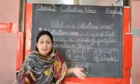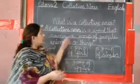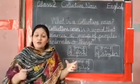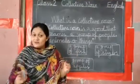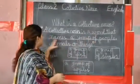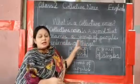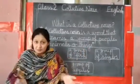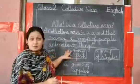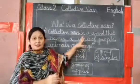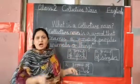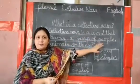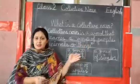What is a collective noun? A collective noun is a word that names a group of people, animals or things. Once again, a collective noun is a word that names a group of people, animals or things.